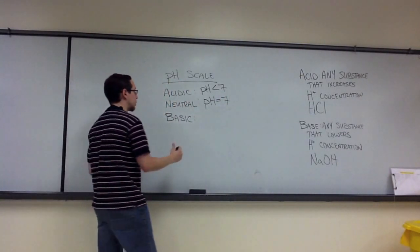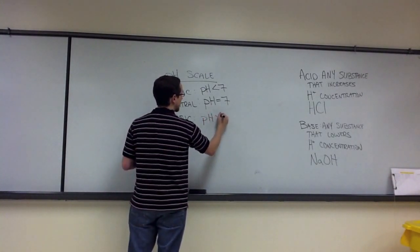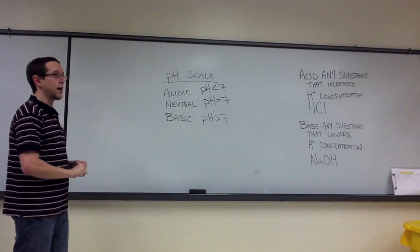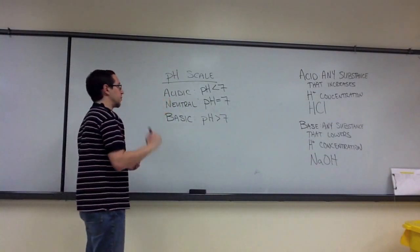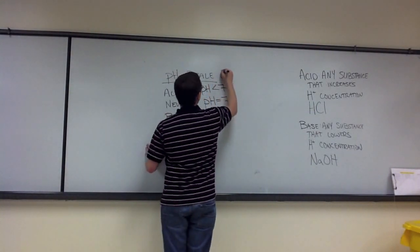And if a solution is basic, or classified as basic, then its pH should be greater than 7. Typically viewed as 7.01 up to 14. So this pH scale goes from 0 to 14.